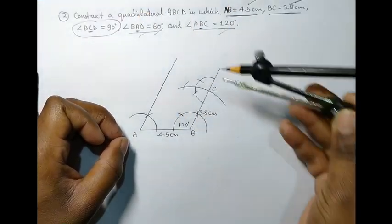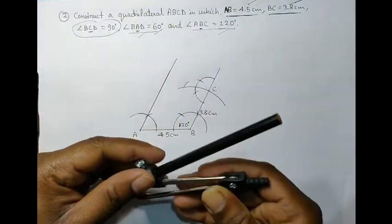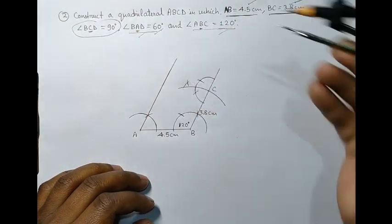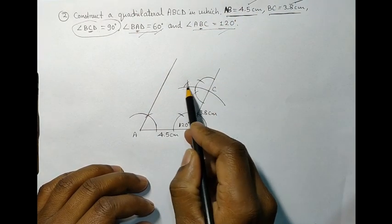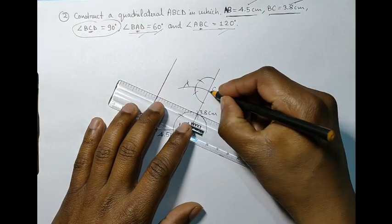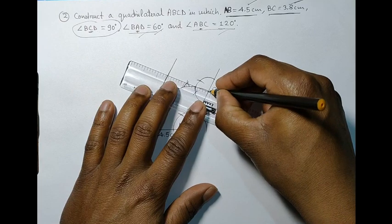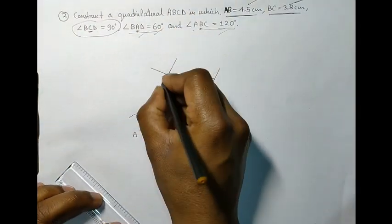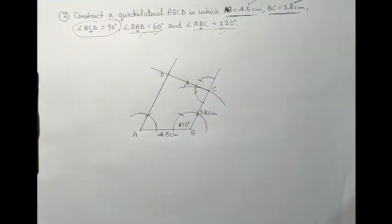So, we will bisect 60 and 120 degree to get our 90 degree angle. And, using that point, and the point C, we will draw a straight line intersecting the other line that we drew. So, that will be our point D.